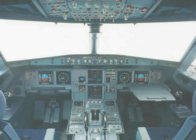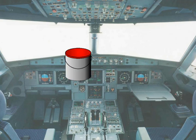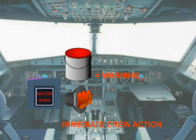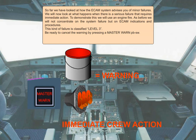So far we have looked at how the ECAM system advises you of minor failures. We will now look at what happens when there is a serious failure that requires immediate action. To demonstrate this, we will use an engine fire. As before, we will not concentrate on the system failure, but on ECAM indications and procedures. This kind of failure is classified Level 3. Be ready to cancel the warning by pressing a master warning push button switch.